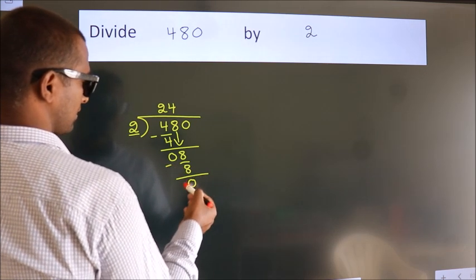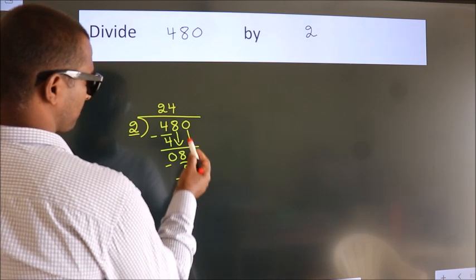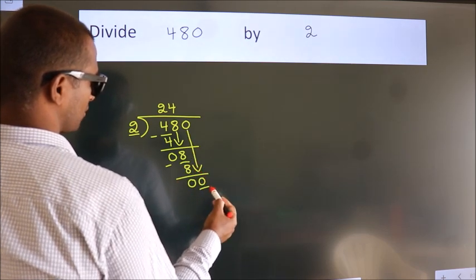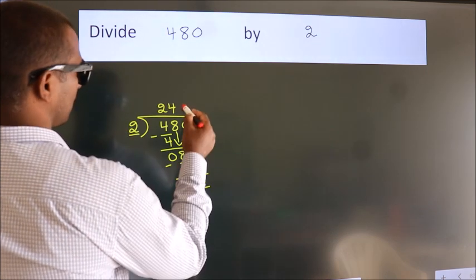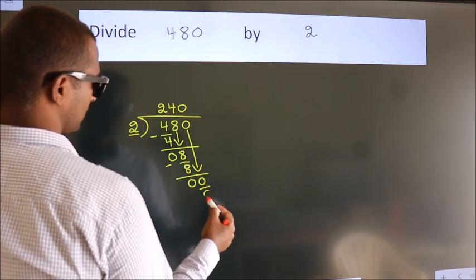After this, bring down the beside number. 0 down. When do we get 0 in 2 table? 2 times 0, 0.